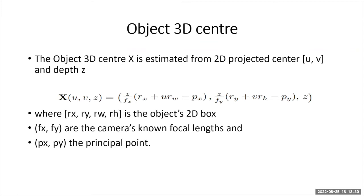For the 3D cuboid we need the object's 3D center. This object 3D center is determined by the equation x of u, v, z where rx, rw, ry, and rh are calculated using the 2D boxes found using the 2D cube head. fx and fy are the focal length, and px and py are the principal point.